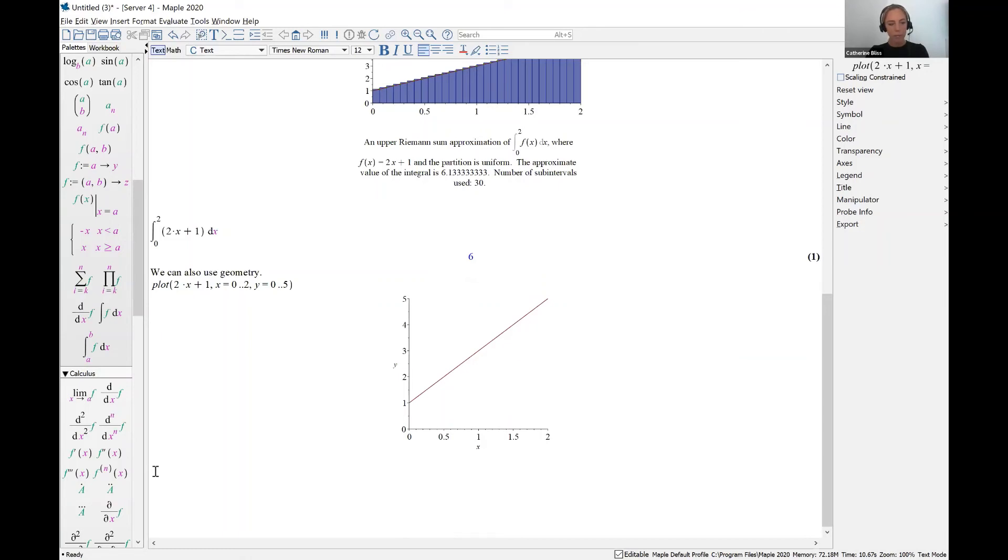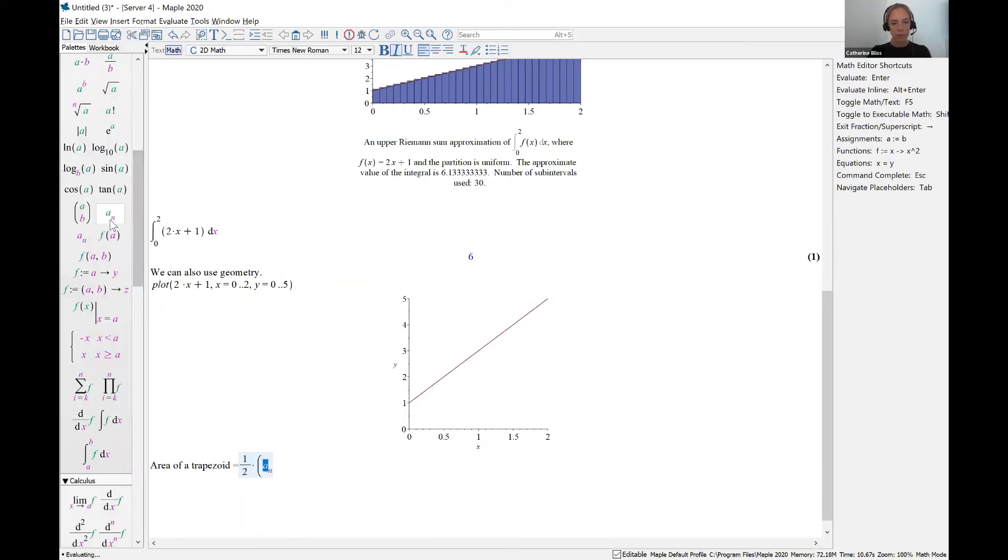So I'm interested in this area. This is a trapezoid. So let's make a note here. The area of a trapezoid is given by 1 half times base 1. So let's get the notation with the subscript in there.